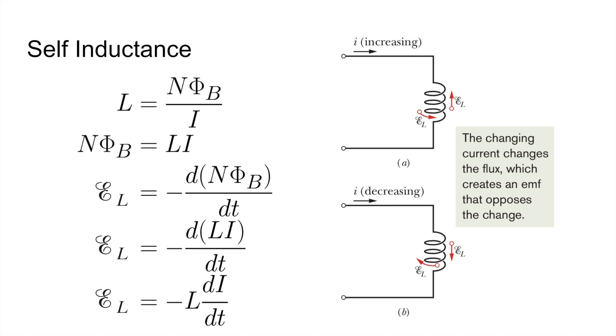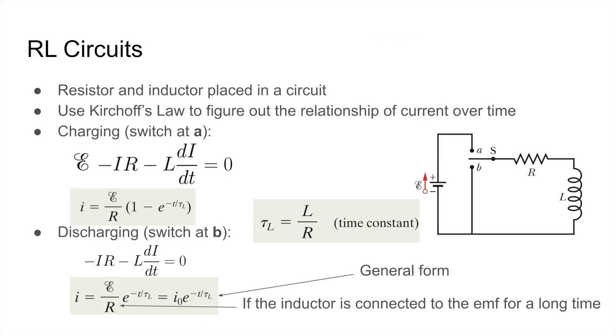A very important circuit is RL circuit. So that's when a resistor and an inductor are placed in a circuit, and an EMF may or may not be included. So to find the relationship of current over time, we have to use Kirchhoff's law. So when the RL circuit is charging, the switch would be at A in the diagram on the right. So if we start with Kirchhoff's law,